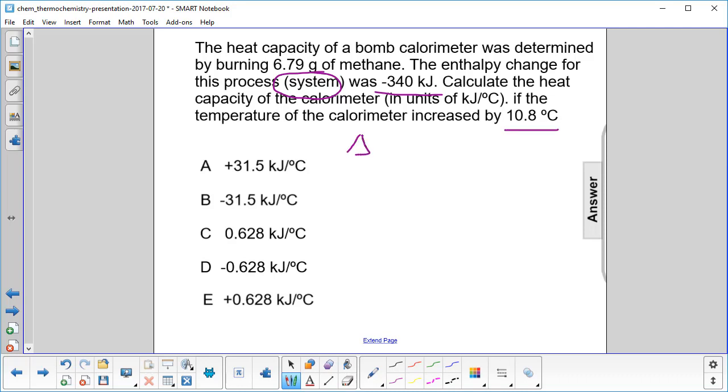So that means delta T is going to be a positive 10.8 degrees Celsius. And we use the equation for a calorimeter, a bomb calorimeter, which is delta H change in enthalpy equals C delta T.